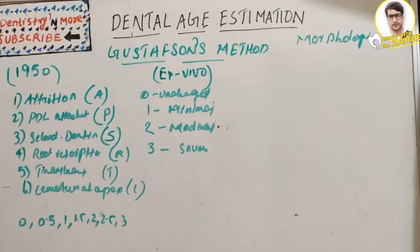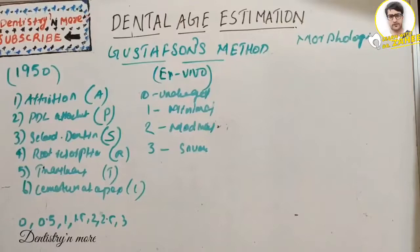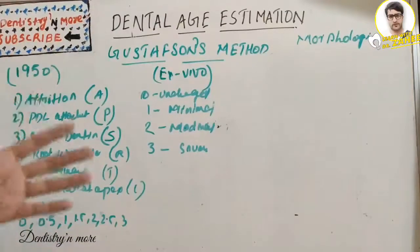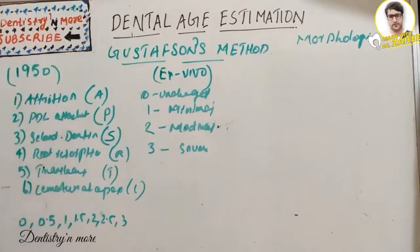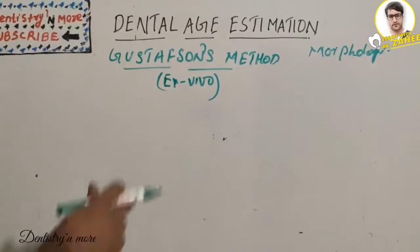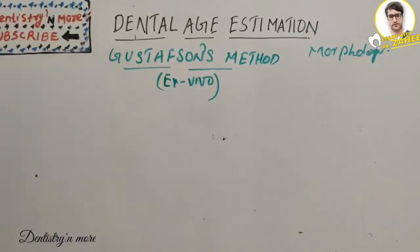Hello everyone, welcome back to the continuation of our dental age estimation methods. Last session we finished Demirjian's method of radiographic dental age estimation. Today's session is about the morphological method — that is, Gustafson's method of dental age estimation. Ex vivo means we need to remove the tooth with minimal alteration and do the examination to estimate the age.